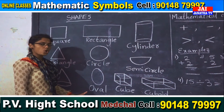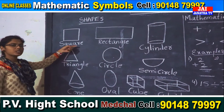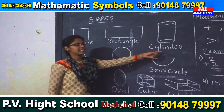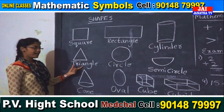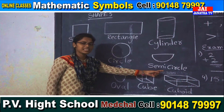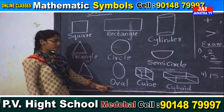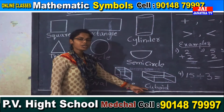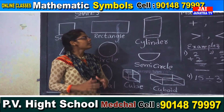Once again we will revise all these shapes. First one is square, rectangle, cylinder, triangle, circle, semicircle, cone, oval, cube and cuboid. These are the basic shapes.